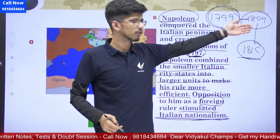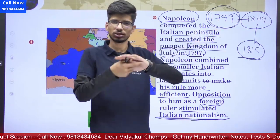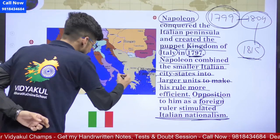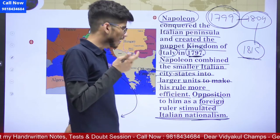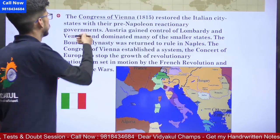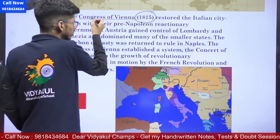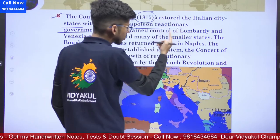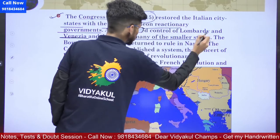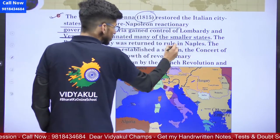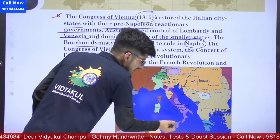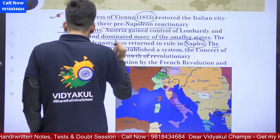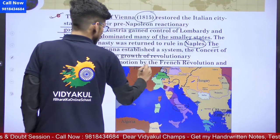In 1815, remember this year — the Congress of Vienna restored the Italian city-states with their pre-Napoleon reactionary governments. Austria gained control of Lombardy and Venezia, dominated many of the smaller states of the Austrian-Hungarian Empire. The Bourbon dynasty was returned to rule in the Kingdom of Naples. So from this point, the feeling grew among Italian people: how can a foreigner do this to us?